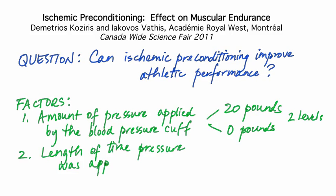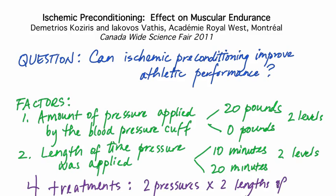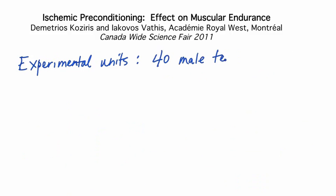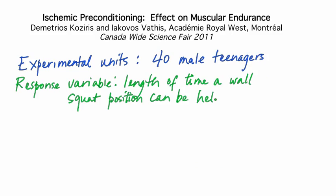They also compared applying the pressure for 10 minutes versus 20 minutes, giving a total of four treatments — the four combinations of the two pressures and the two lengths of time applied. Each treatment was applied to 10 teenage males, so there's our replication. Since there are four treatments, there were 40 participating teenagers, and these are the experimental units. They were chosen to be of similar athletic ability. After application of the treatment, the length of time the teenagers could stay in a wall squat position was measured — this is the response.